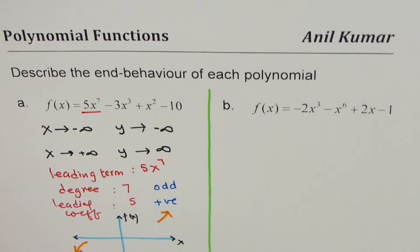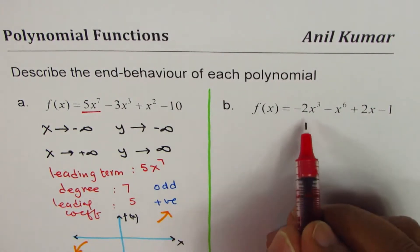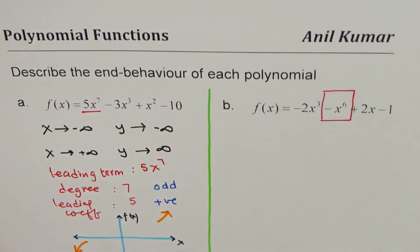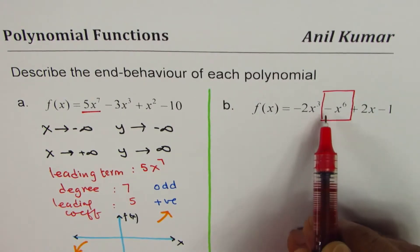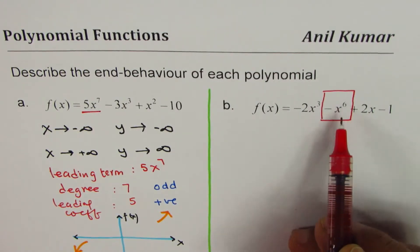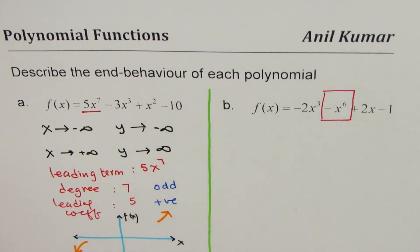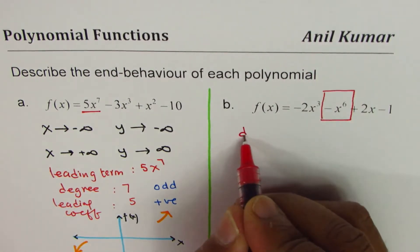I would like you to pause the video and answer the next question. Now let's do the same thing for polynomial B. The first step is to identify the leading term — and it is not the first term written. The leading term here is −x⁶. So the term we need to analyze is −x⁶.